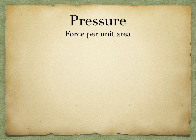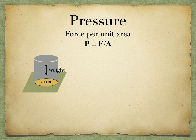Pressure is force per unit area, expressed as the equation P = F/A. If we think about a cylinder resting on a surface, gravity exerts a force pulling its weight down toward that surface, and that weight is distributed over the base of the cylinder in contact with the surface.